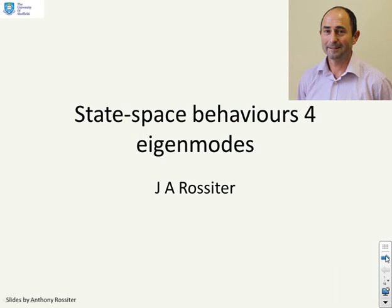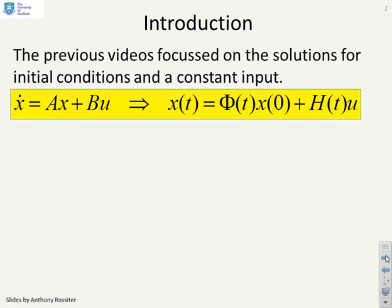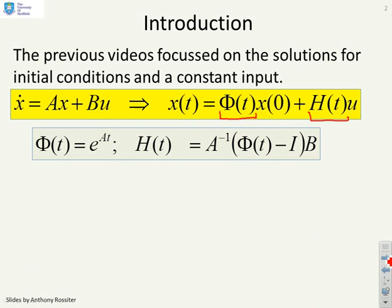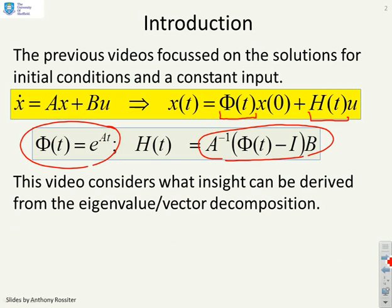The fourth video in this section on state-space behaviours looks at behaviours linked directly to the eigenvalues, which we will call eigenmodes. Previous videos focused on the solutions for initial conditions and the constant input for a state-space model. For a model x-dot equals Ax plus Bu, you could find a state-transition matrix φ(t), giving dependence on the initial condition, and a step-response matrix h(t), giving dependence on a constant input. This video considers what insight we can derive by looking more carefully at the eigenvalue-eigenvector decomposition.